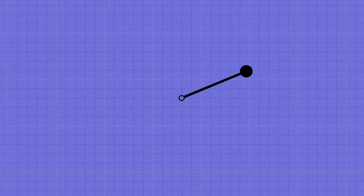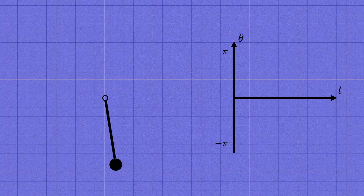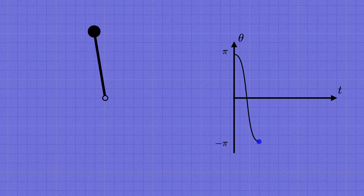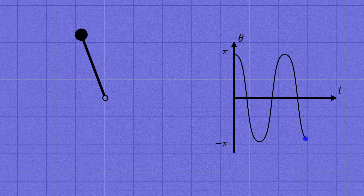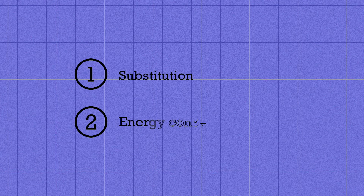This strategy can often be successful for harder problems, even when our first method wouldn't work. A great example is the simple pendulum, which is supposed to be so simple it's in the name, but actually it's surprisingly tricky. Now we've seen two different ways of solving the harmonic oscillator equation, and these will more or less do the job for most of the equations you'll meet in your first mechanics class.